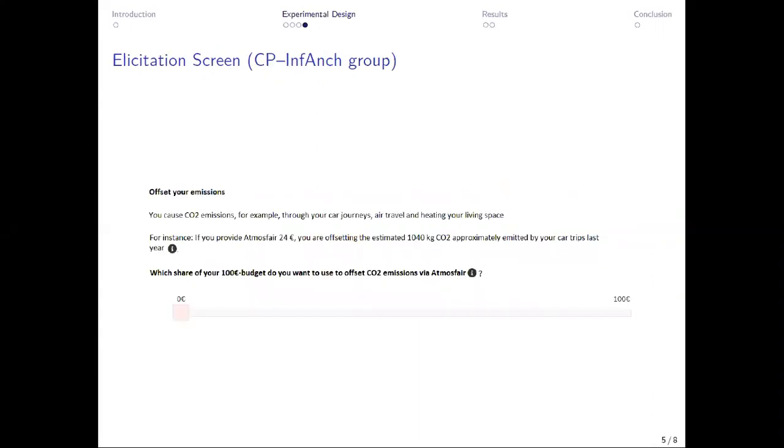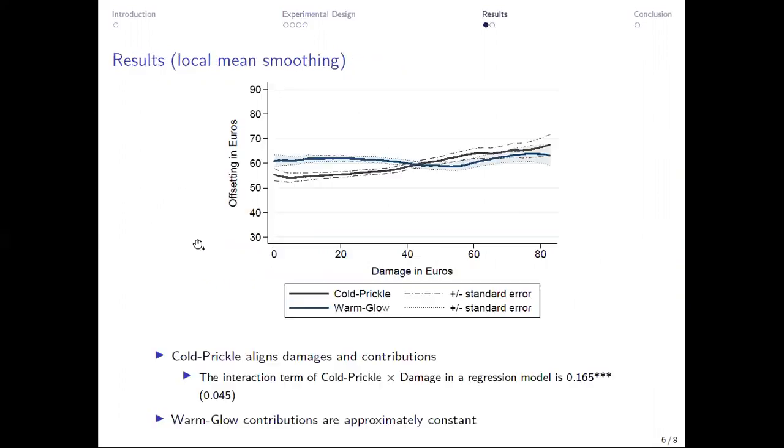And then on the elicitation screen, first, they saw the framing sentence. Then they saw the sentence introducing the anchor. And then on the slider, they could make the decision about how much money should be invested in carbon offsets.